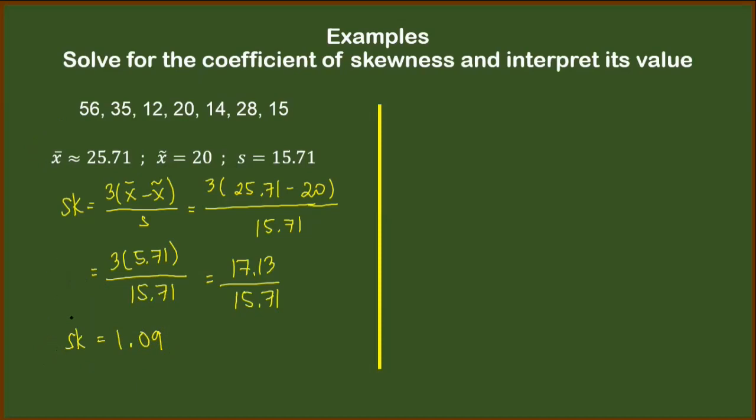And we have to interpret this further. Since we have a value of 1.09 and obviously that is greater than zero, meaning this dataset is skewed to the right, or we can also write here positively skewed.